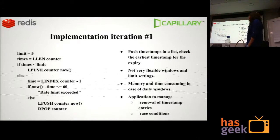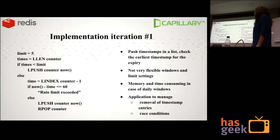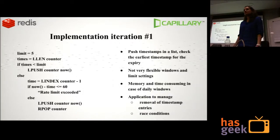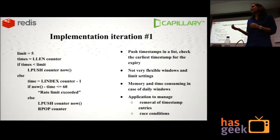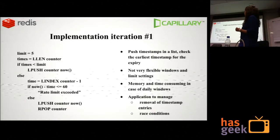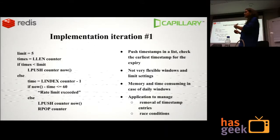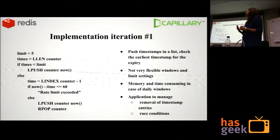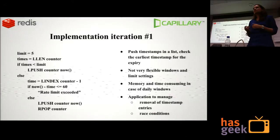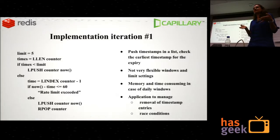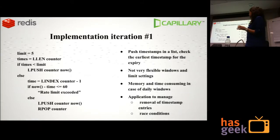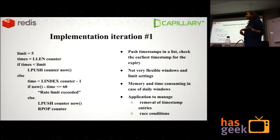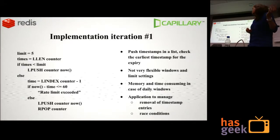The first implementation used a list. Each time a call is made for an entity we push the timestamp to the list. If the length of the list has not exceeded the limit, we allow it. If the limit has already been exceeded, we pick up the earliest timestamp and compare it with the current timestamp to see whether it's within the time window. If it is within the range it means the rate has exceeded; otherwise, we push the new timestamp and remove the oldest one.